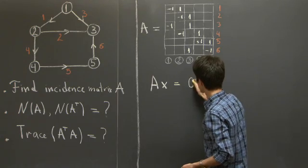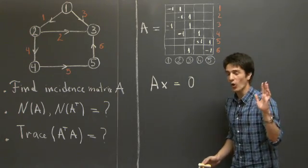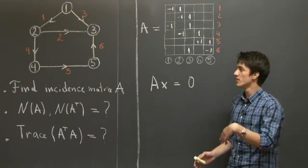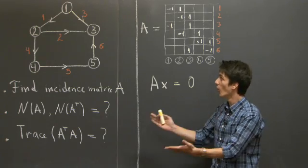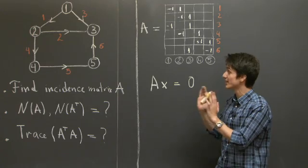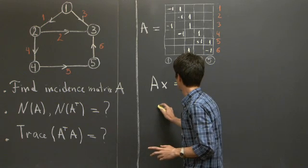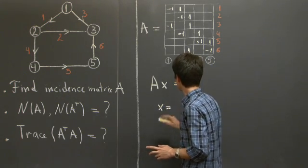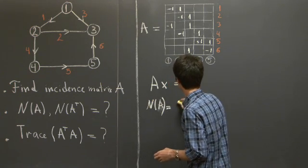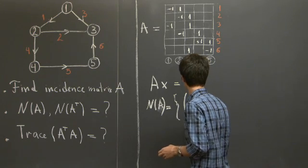OK, so then, if Ax is to be 0, this means that across the graph, across all the edges of the graph, all potential differences are 0. Therefore, all the potentials at all the nodes need to be equal to a constant number. So, we conclude that the null space of A is spanned by the constant vector 1.